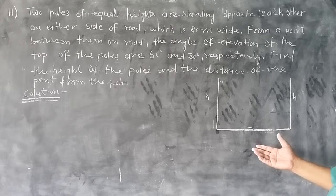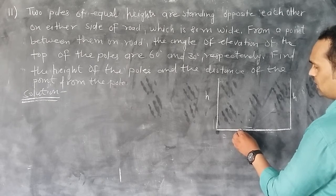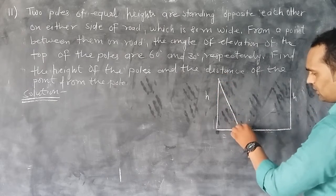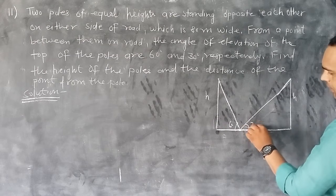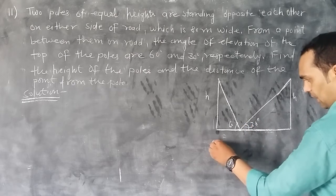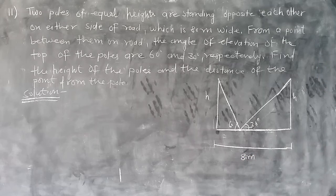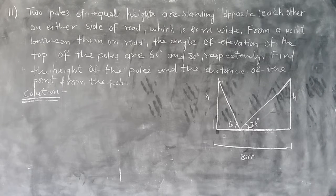The angle of elevation from point E to the top of one pole is 60 degrees, and to the top of the other pole is 30 degrees. The distance between the poles is 80 meters. We need to find the height of the pole and the distances of the point from each pole.